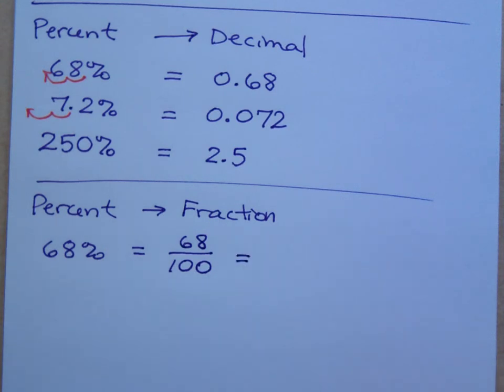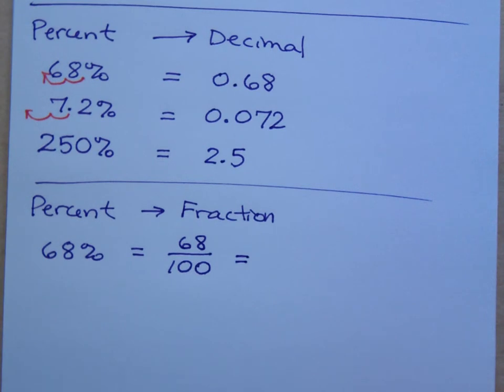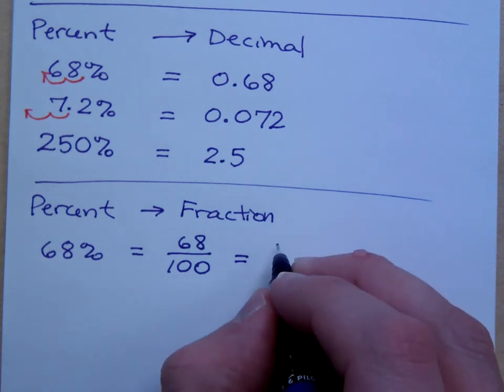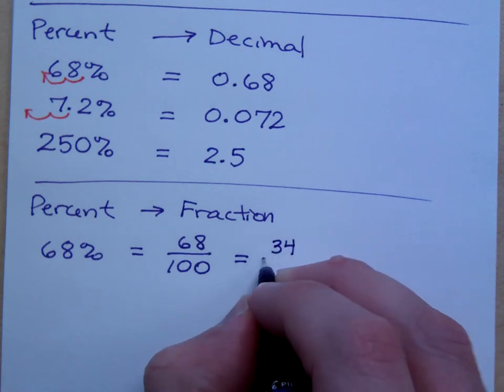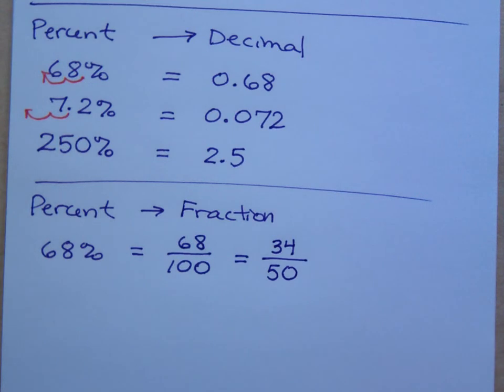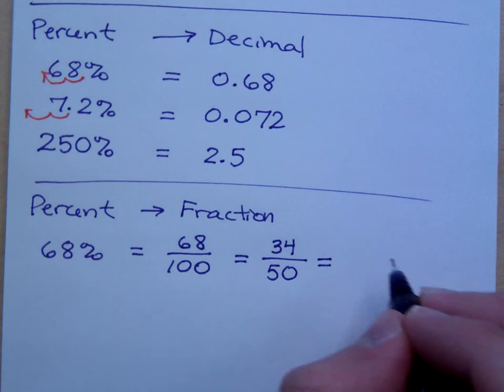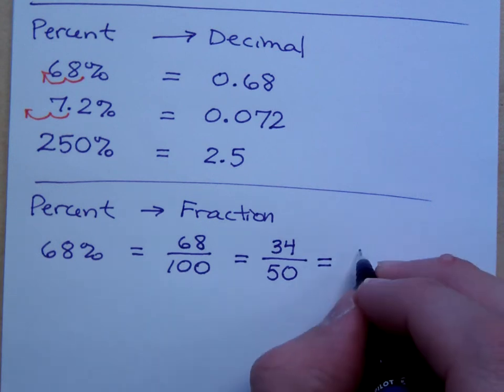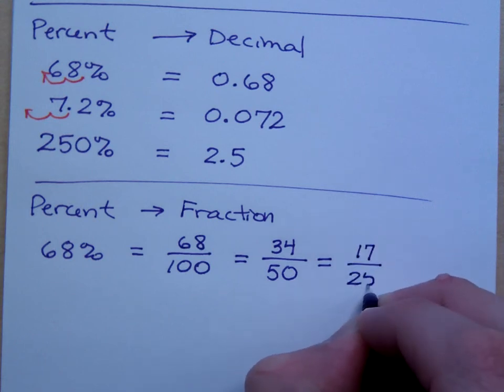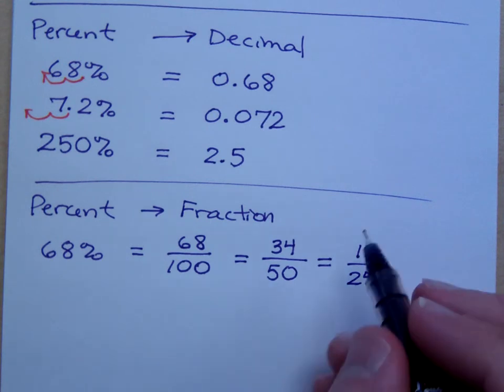But we do want to make sure that anytime we have fractions, that we do what with them? Reduce them. Always. So how does this reduce? You know that it can at least reduce by 2. So that gives you 34 over 50. Can I reduce this again? Yes. Divide by another common factor of 2. So that gives you 17 over 25. Can I reduce 17 to 25 any further? No. So this guy's good.